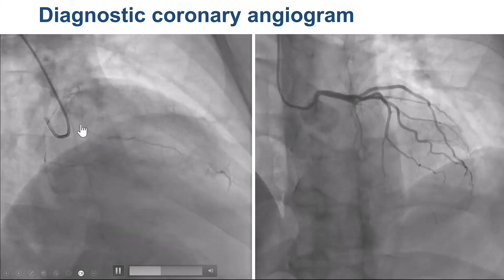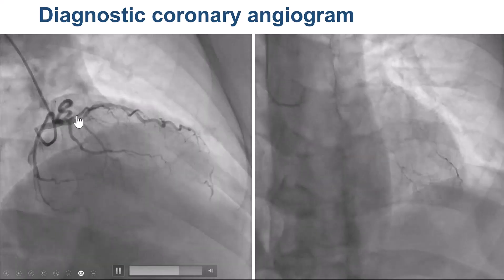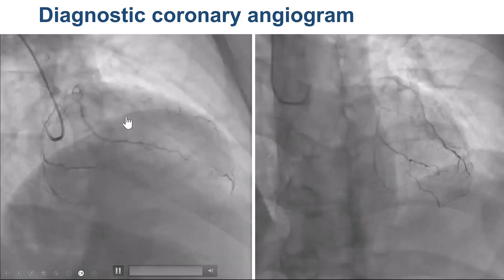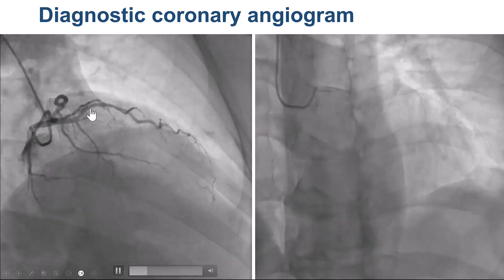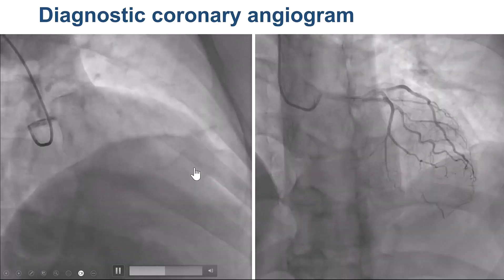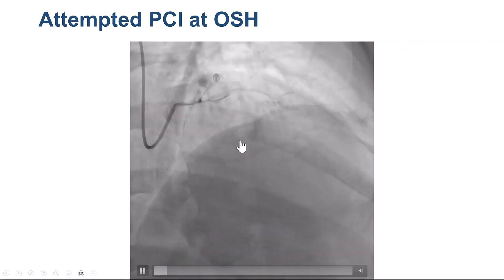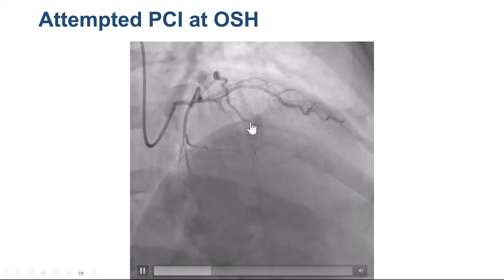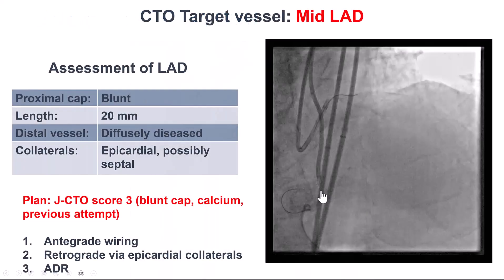On diagnostic angiography, we see that the middle LAD is occluded. There is a large septal and a smaller septal branch potentially coming through here. There is also a diagonal and a proximal cap. There are some ipsilateral collaterals from the diagonal filling the distal LAD. There was an attempt to cross the lesion, but it was unsuccessful, and the patient again came to our center for a repeat attempt.